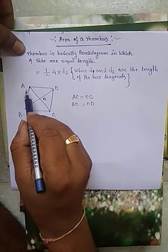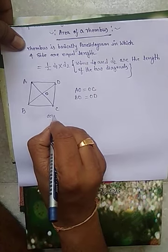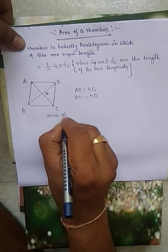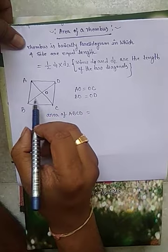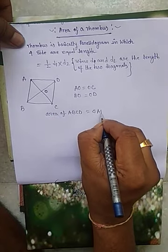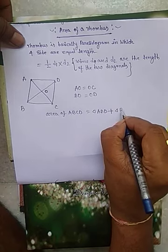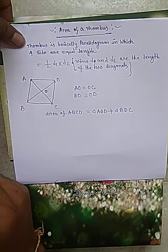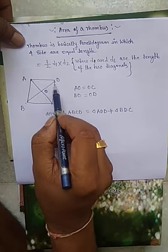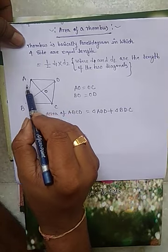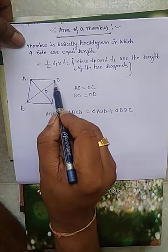So, area of the rhombus ABCD is equal to area of triangle ABD plus area of triangle BDC.